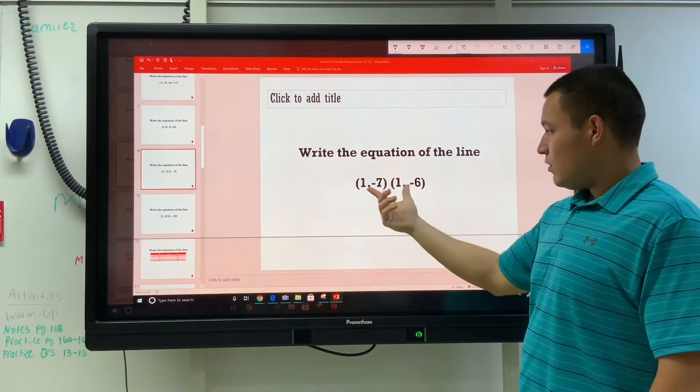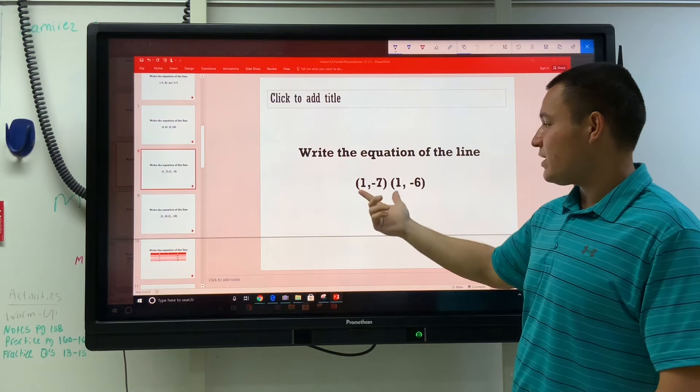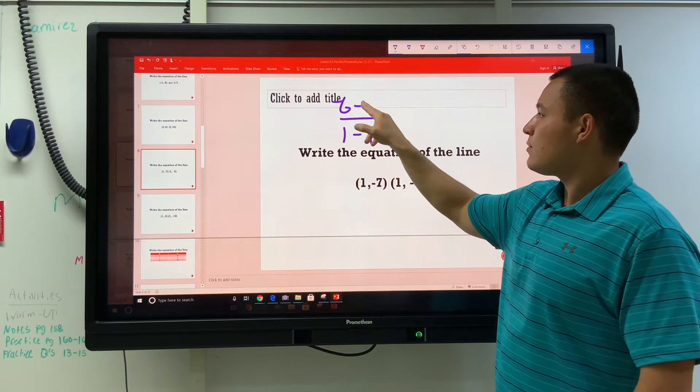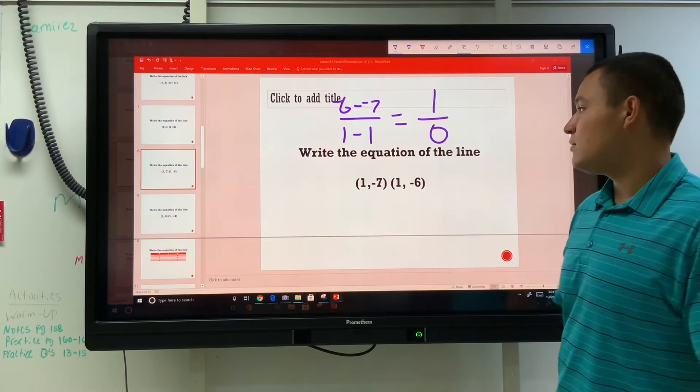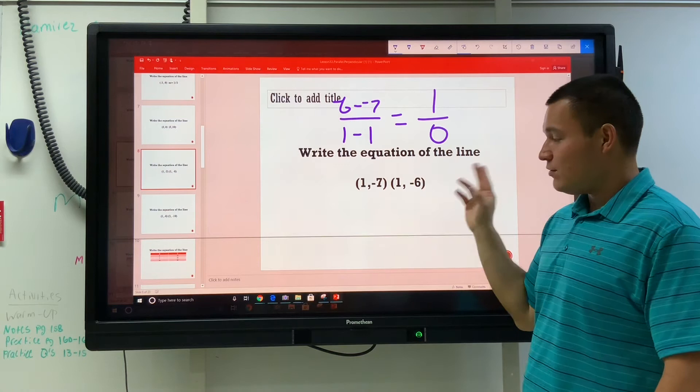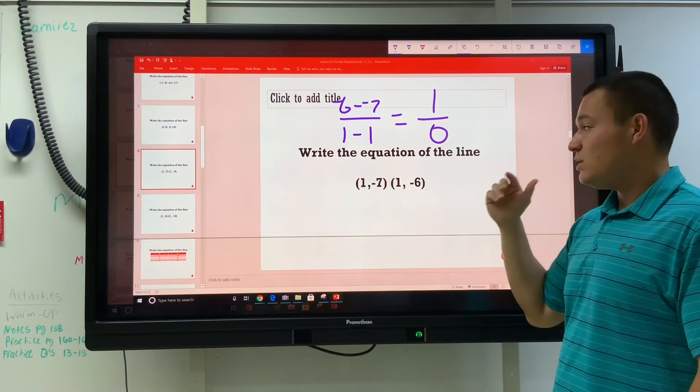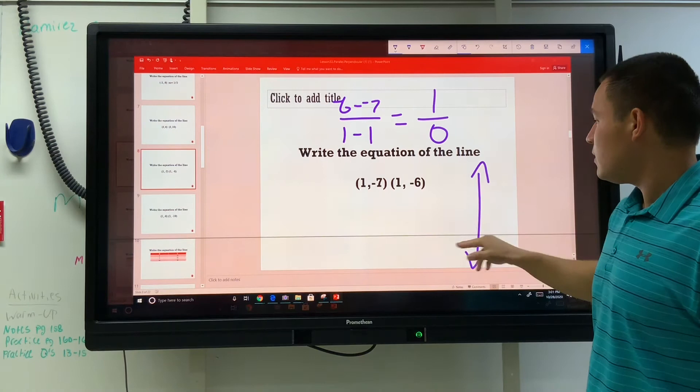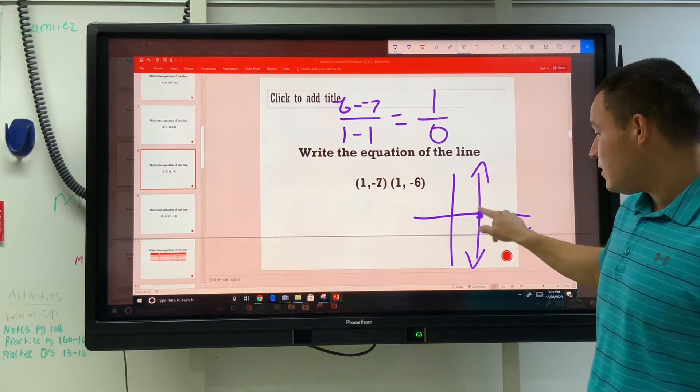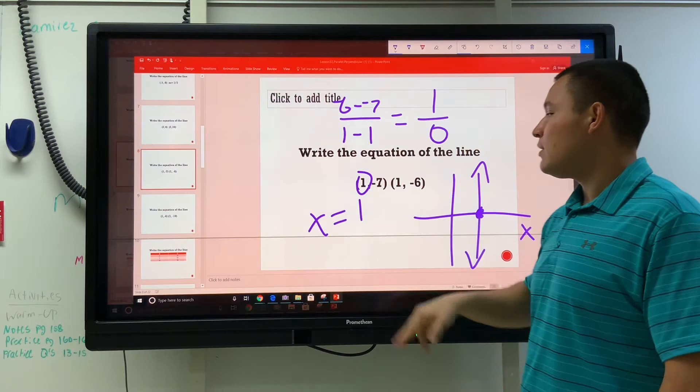Let's try this one. Two points. Find the slope first. Subtract those y's, subtract those x's. 1 over 0. It's undefined again. So you go ahead and write down what the answer is. Is it going to be x equals 1, or is it going to be y is equal to something? Undefined means vertical. So on the x and y axis, the only number that matters is the x if it's vertical. And the x is equal to 1. That's what's not changing.